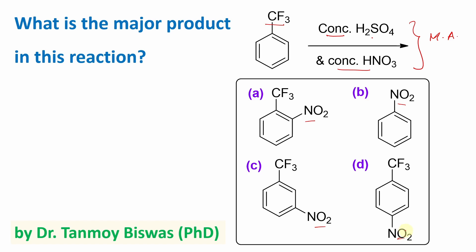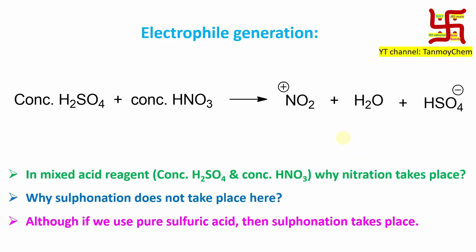Now you have to say what is the major product of this reaction. Since it's a nitration reaction or aromatic electrophilic substitution, how is the electrophile NO2+ generated? In this case, actually, this concentrated sulfuric acid is acting as acid.